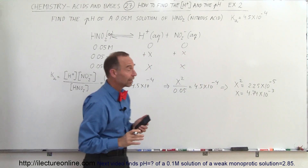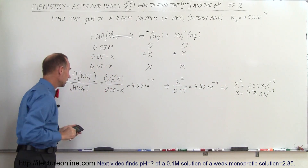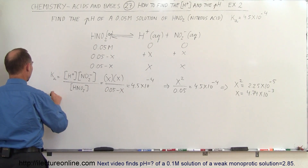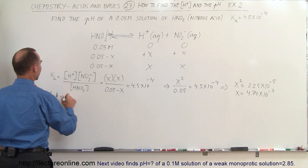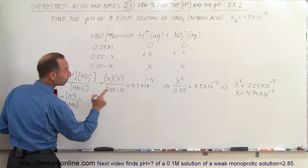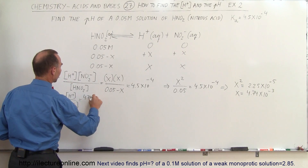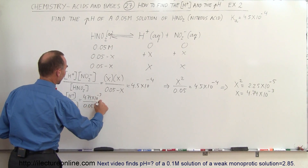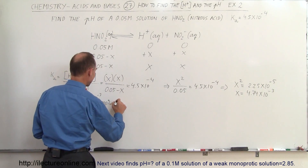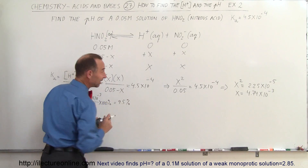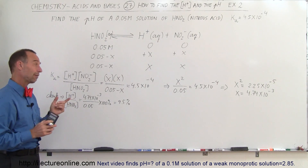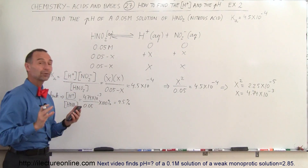Now let's check how that compares to the concentration of nitrous acid. We divide the concentration of the hydrogen ion, 4.74×10⁻³, by 0.05 and multiply by 100%, giving us 9.5%. That is definitely not 5% or less, so our initial assumption that X was small enough was wrong. We have to solve the quadratic equation instead.